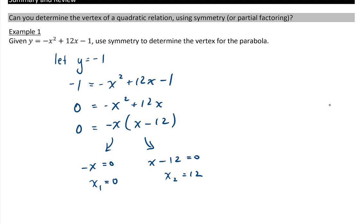So these are the two points, 0 and negative 1, and 12 and negative 1, since we subbed in a y value of 1 to start.